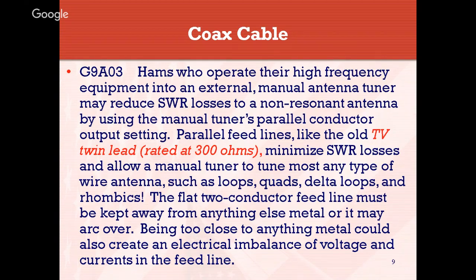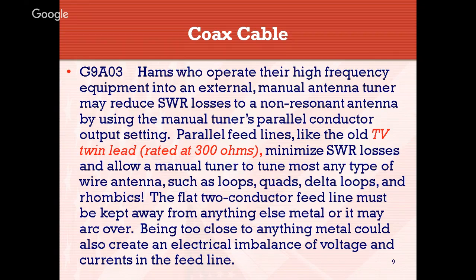With the G5RV, you usually have a balun that runs from your shack out to the feed line. It helps to tune and use even part of that twin lead or parallel leads as part of the antenna radiator for the different bands. Your radio is looking for a nice low SWR and about a 50-ohm impedance, and the G5RV is designed to accommodate that.